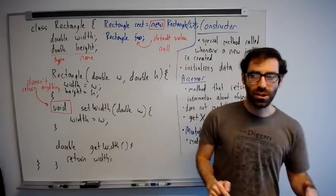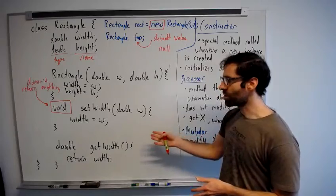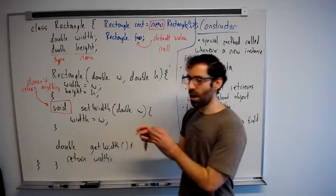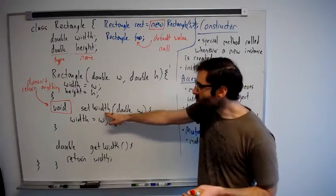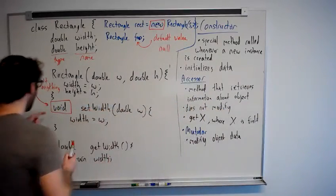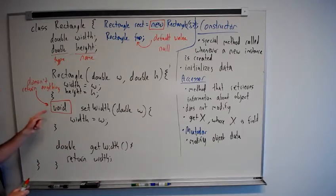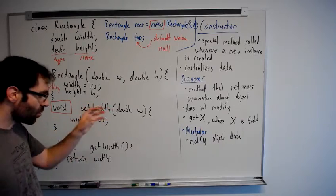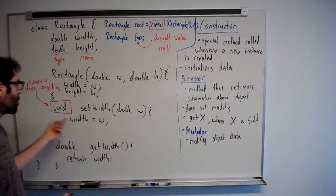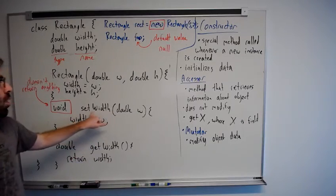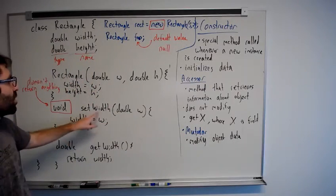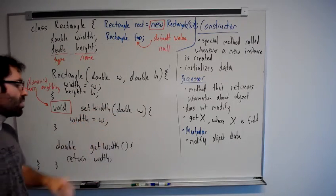Unlike Python, Java does not have every function return none if there's no return value. Meaning that you can't assign a variable equal to set width because set width has no value. That is not valid Java code. And we've seen void somewhere else before. We've seen it on the main method. It's one of the words in our public static void main method.